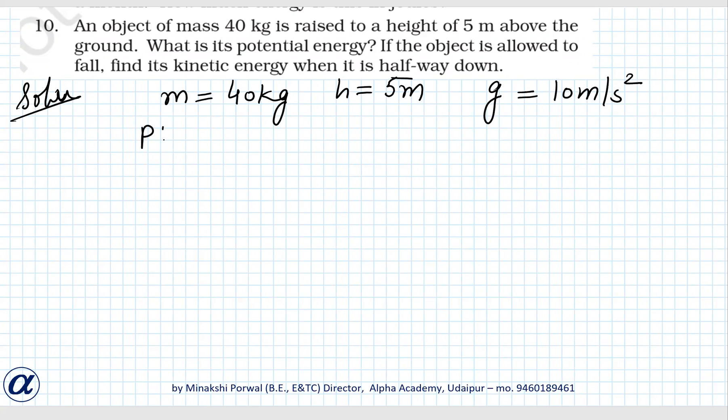So potential energy is equal to m into g into h. That is equal to 40 into 5 into 10, so it is 2000 joules. Now, next part we have done till here, what is its potential energy?